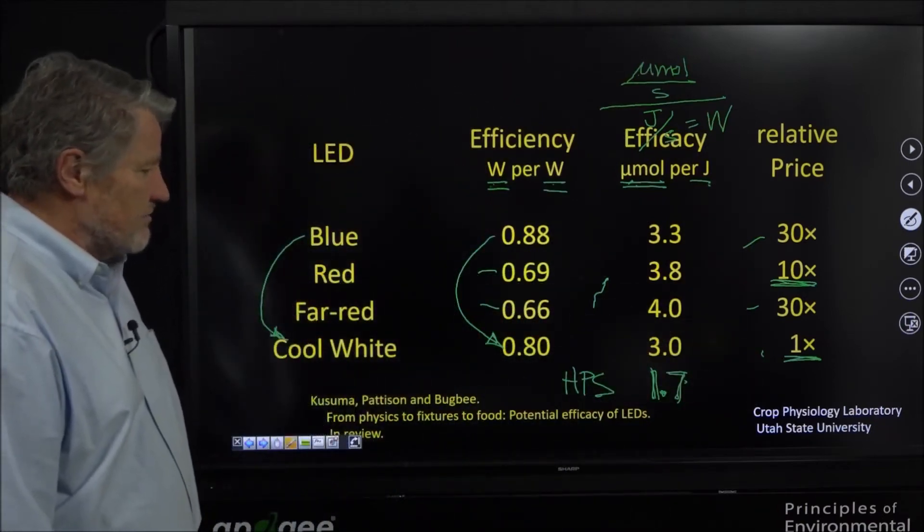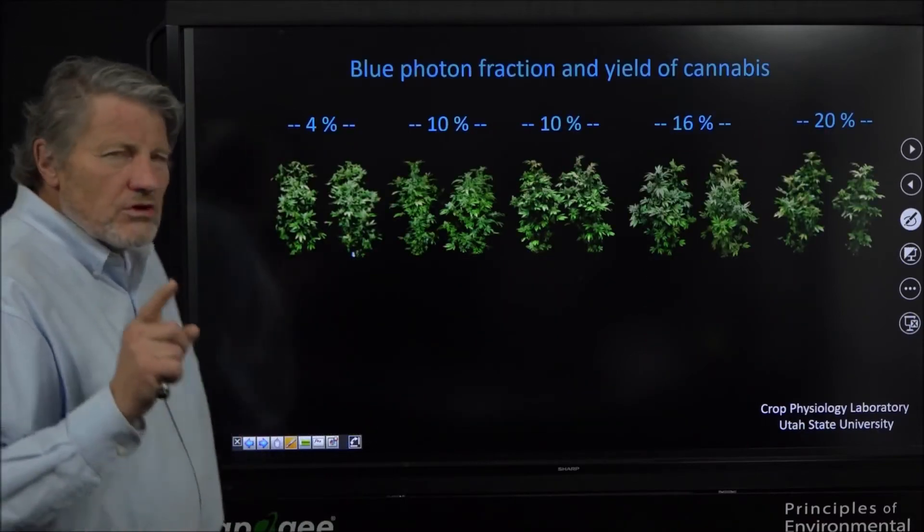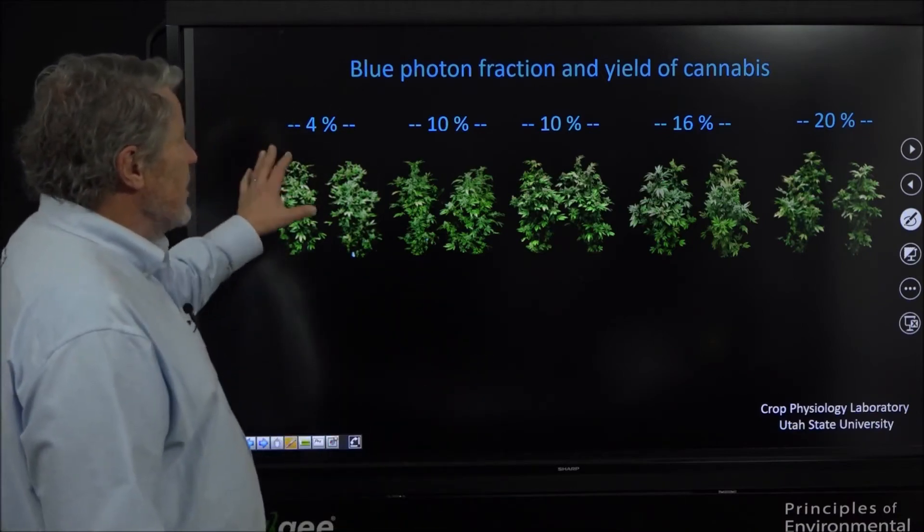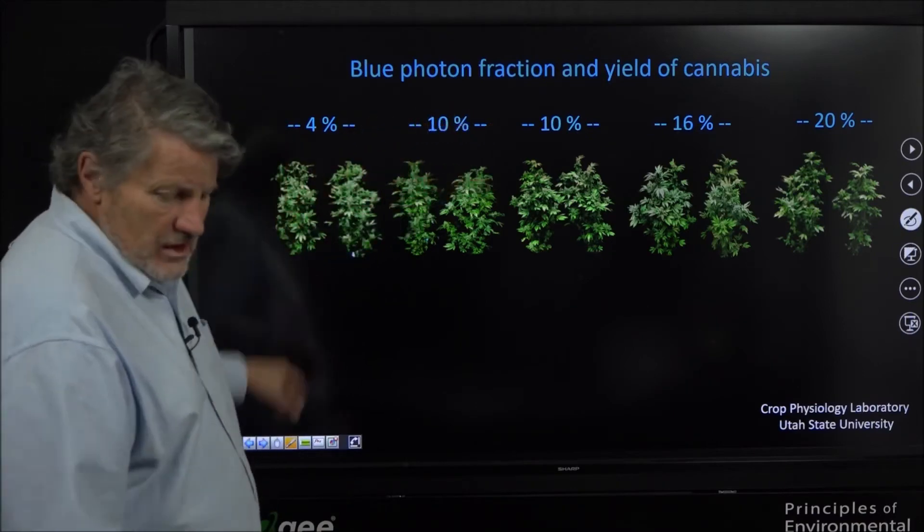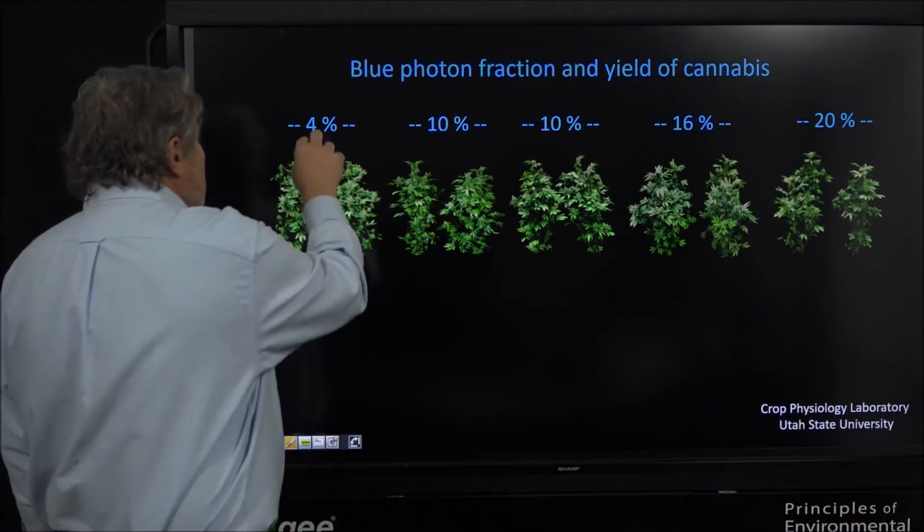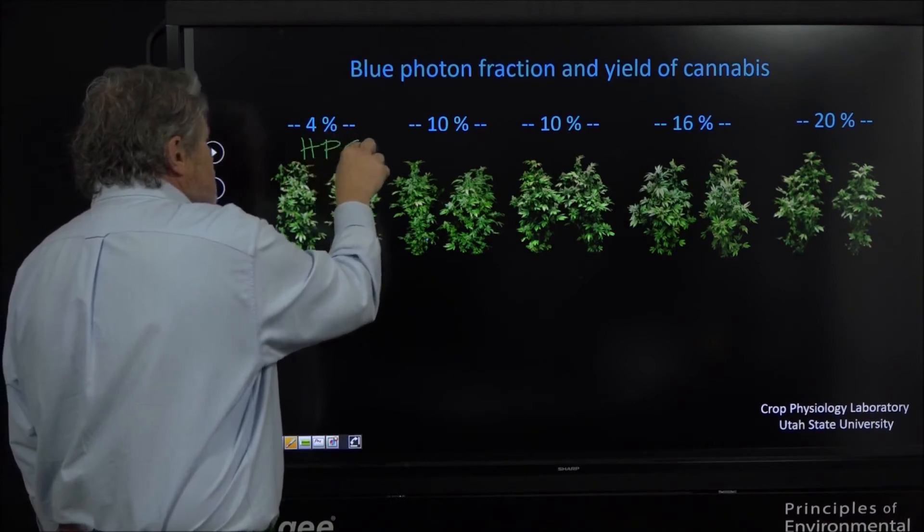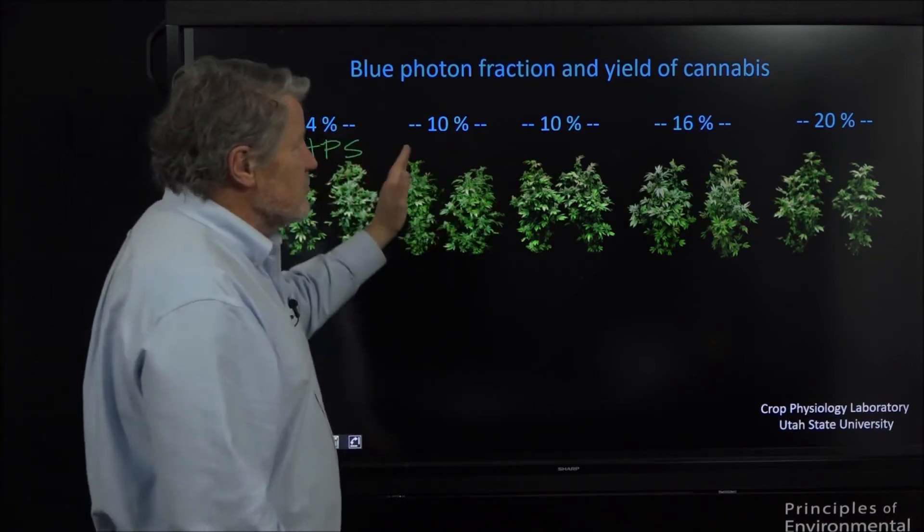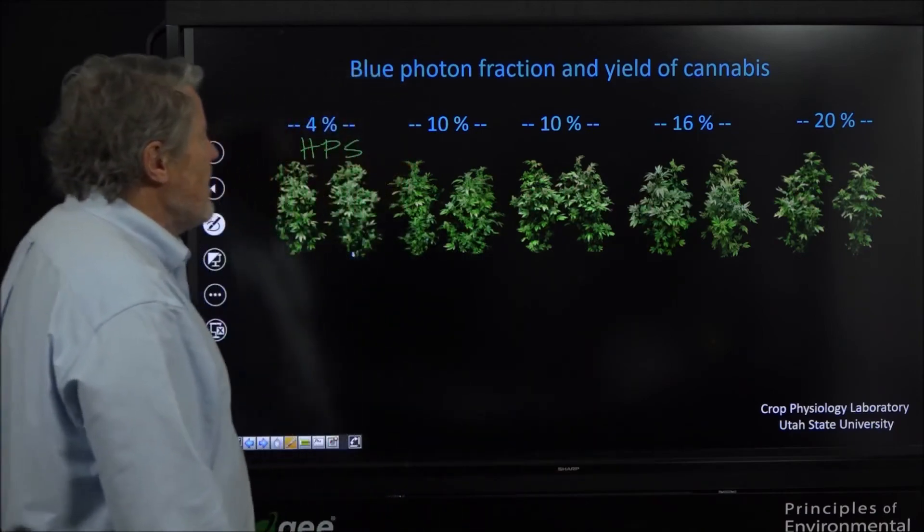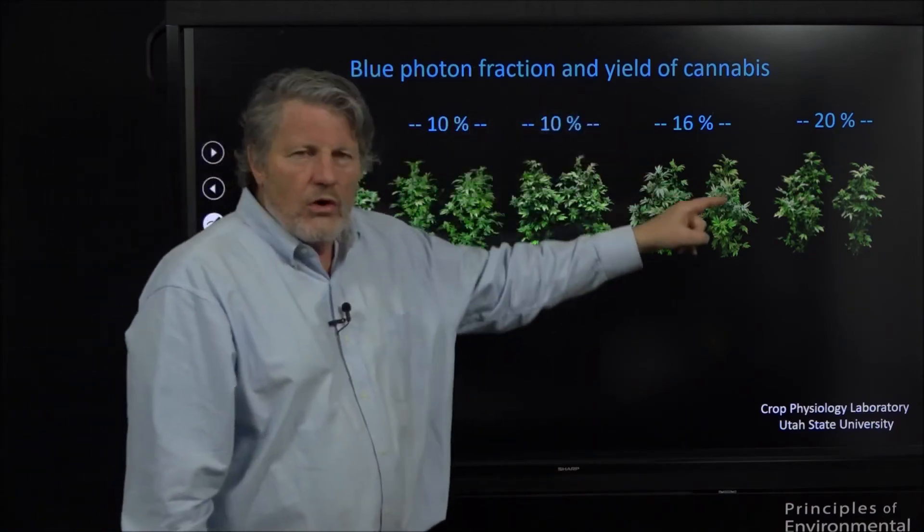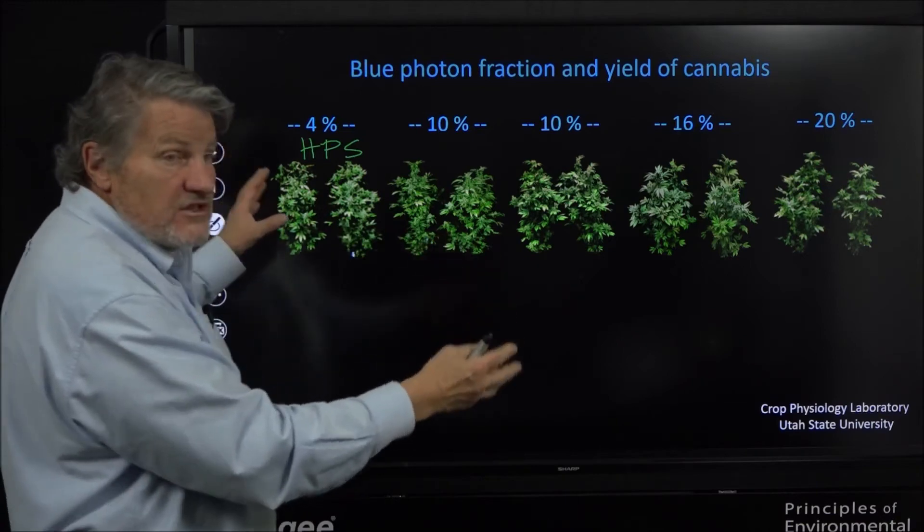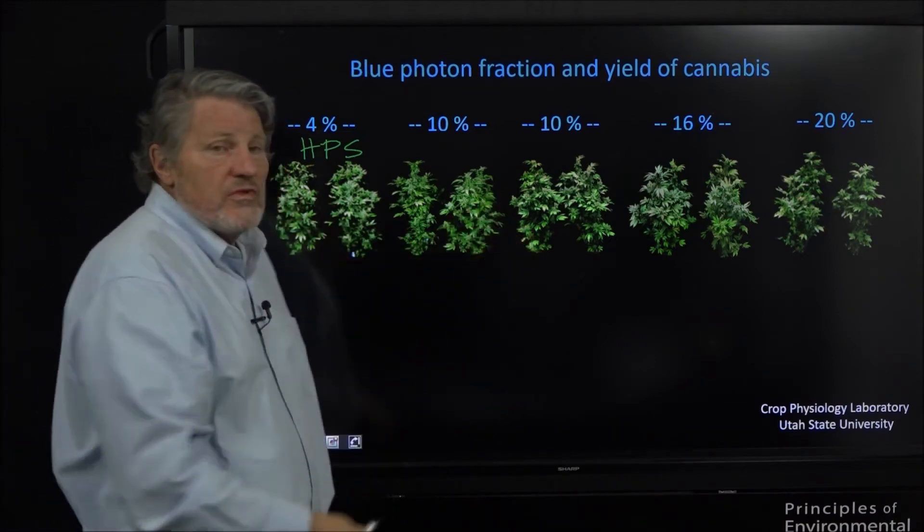Let's look at a few spectral effects. These are cannabis plants close to harvest. We did a study with blue fraction on cannabis. This is 4%. Now for those of you that know blue fractions, this was high pressure sodium lights. These are LEDs - all of these. They're all white LEDs with different fractions of blue and we ramped it all the way from 4% all the way up to 20%. In this case there was no difference in height because we grew them vegetatively in the same environment and moved them into this flowering.